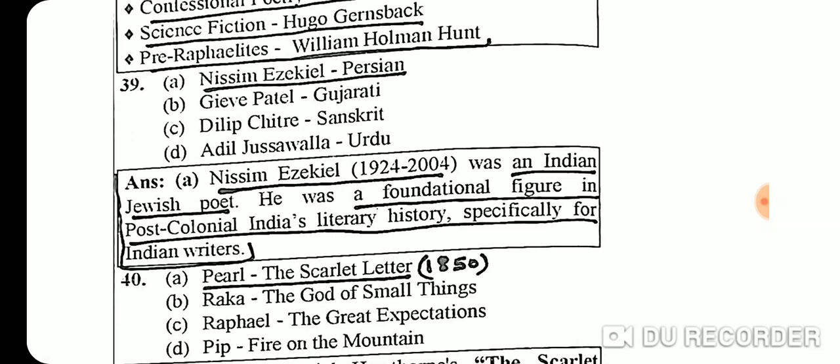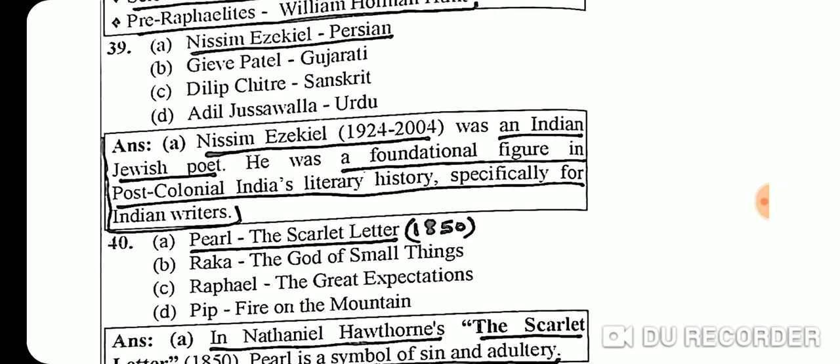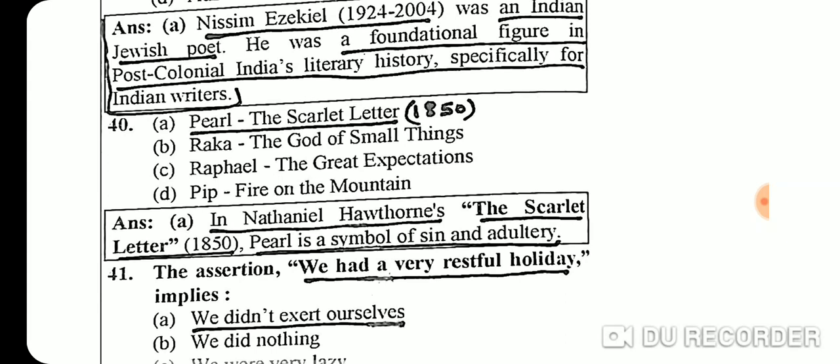Question 39: Nissim Ezekiel's correct match is Persian heritage. Nissim Ezekiel (1924-2004) was an Indian Jewish poet and a foundational figure of post-colonial Indian literary history, specifically for Indian writing in English.